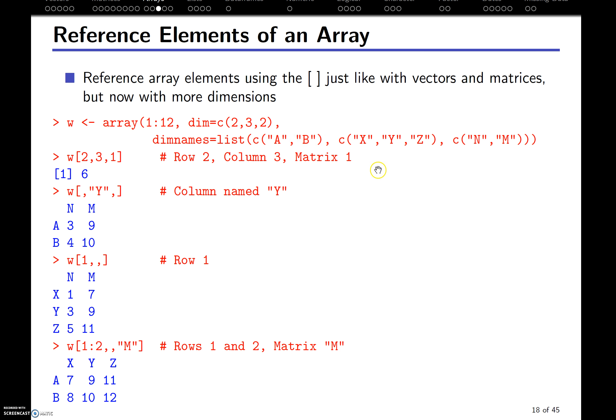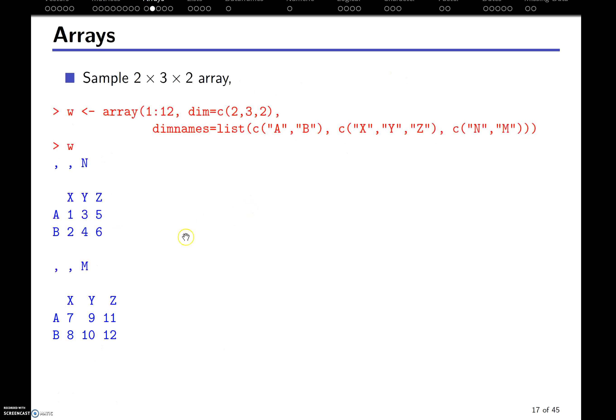We can just pull out a particular column. So if we want to pull out the Y column, remember we have to, if we're going to use the dimension name, we have to surround it in quotation marks, and we pull that out. Notice there's a comma on either side because there's a dimension here. The first dimension, then we go to the second, which we're naming, then the third is also left. And so that's going to pull out 3, 9, 4, 10. Let's make sure we understand why that's happening. So what is Y? Here's Y, 3, 4. Here's the other dimension, Y, 9, 10.